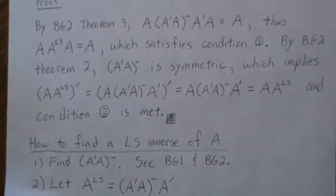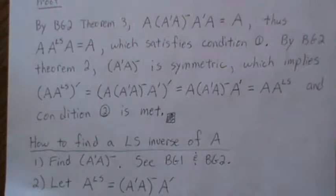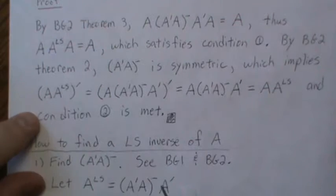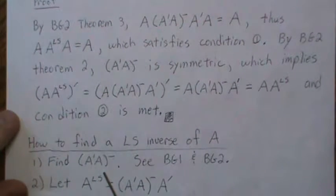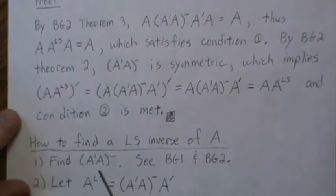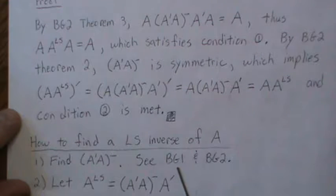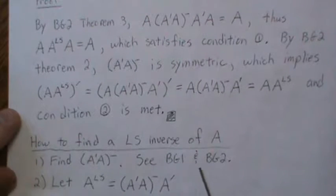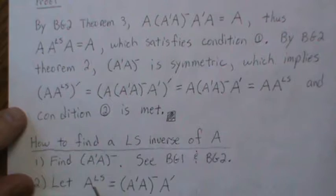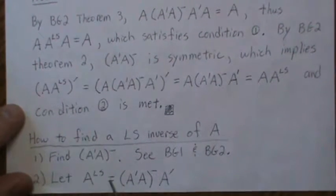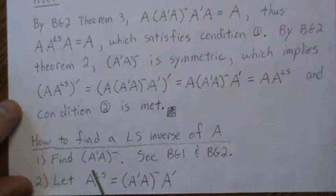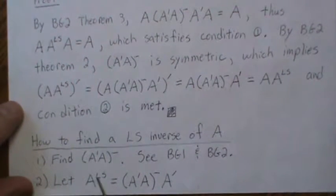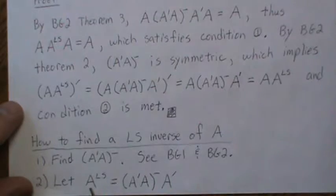How do you find a least squares inverse? First, find a generalized inverse of A·A-prime — that can be done by watching background videos one and two — and then let the least squares inverse be that quantity. You then have a least squares inverse for A.